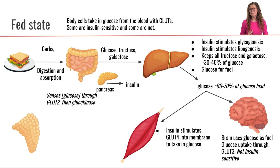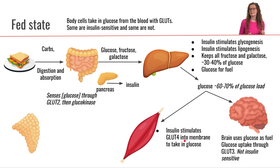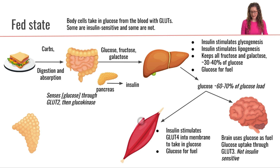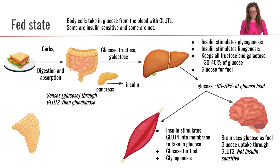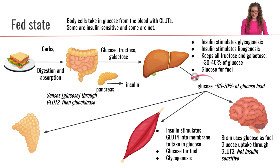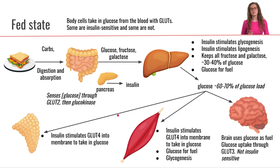Glucose is also traveling around the bloodstream and can be taken up by the muscle. The way muscle takes in glucose from the blood is through GLUT4. GLUT4 is an insulin-sensitive glucose transporter, so GLUT4 is only going to be present on the muscle cell membrane when insulin is present. The muscle can be using glucose as fuel and will also be undergoing glycogenesis, taking that glucose and building it into glycogen.